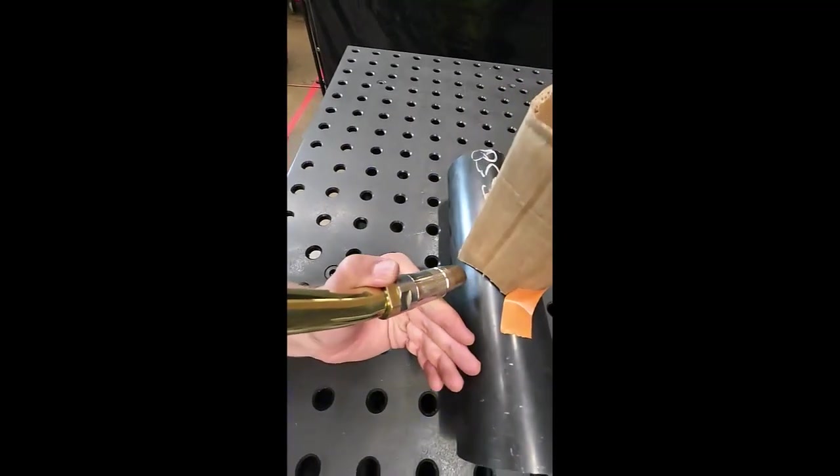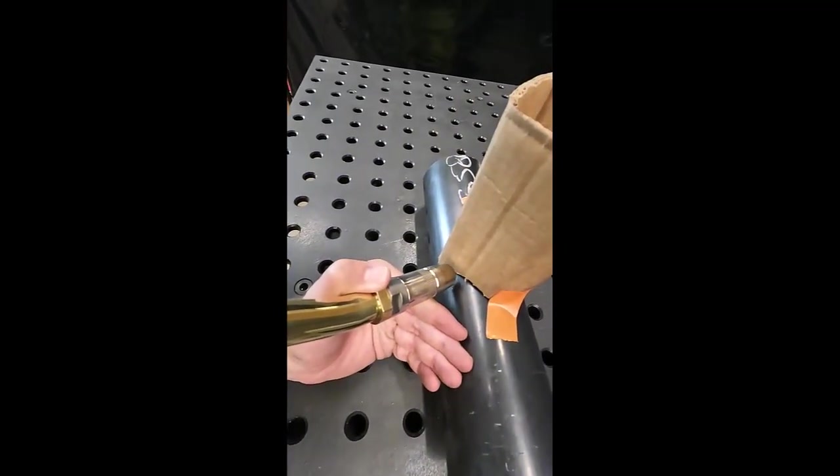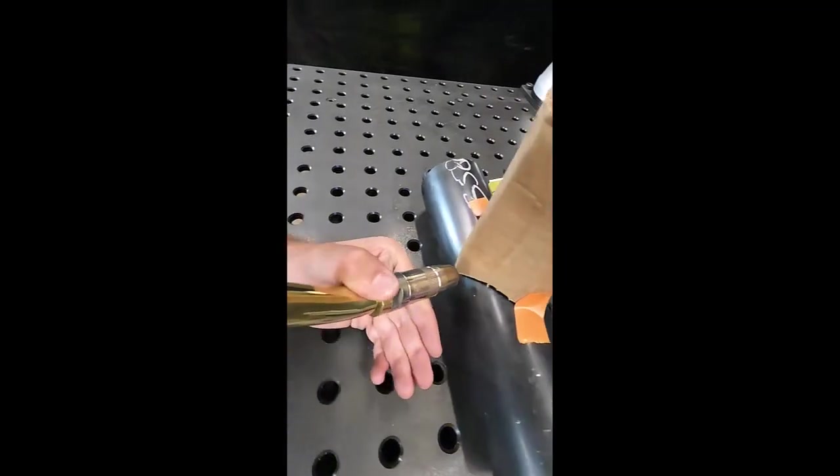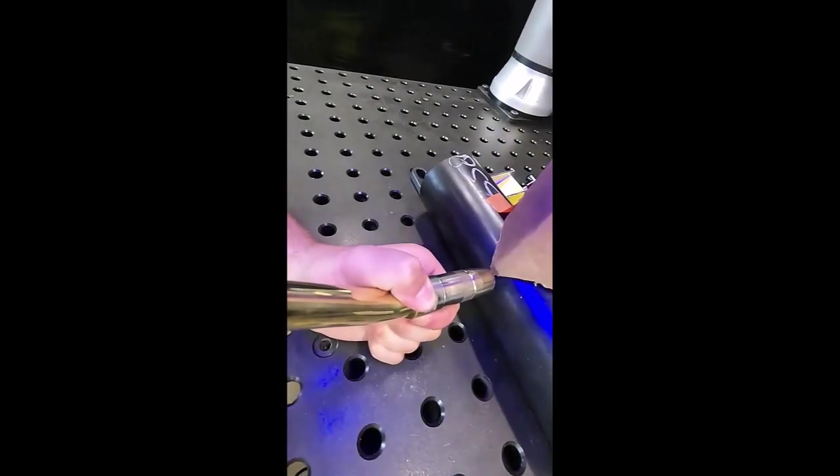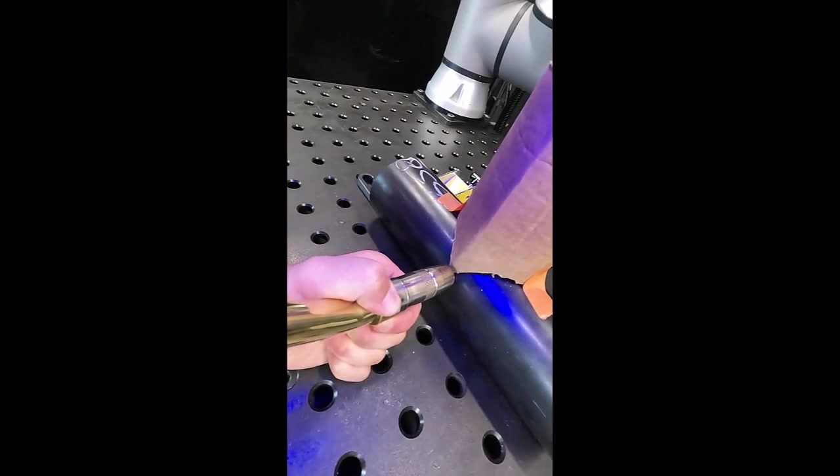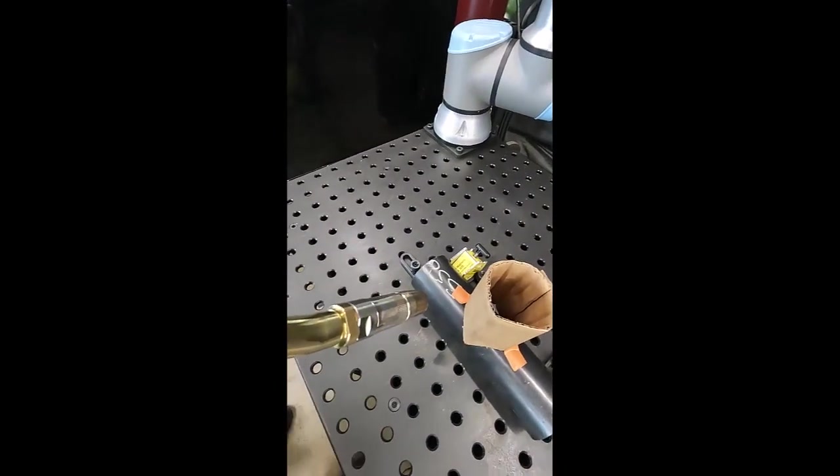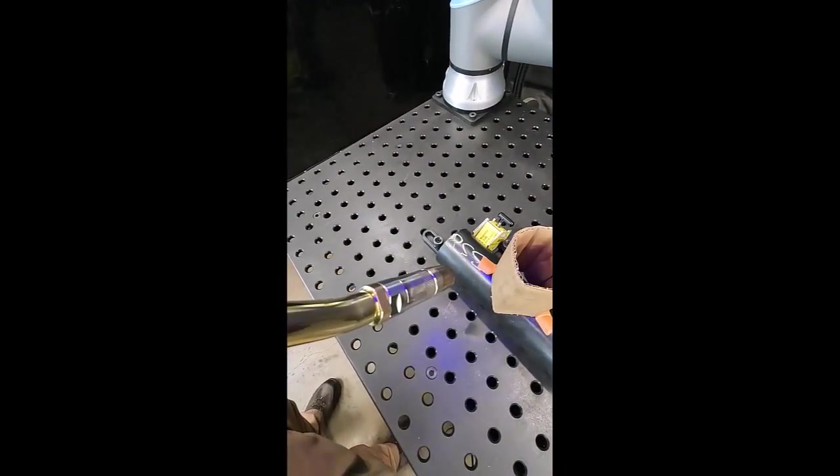And then I'm going to be moving down again. I'm going to set one here, and then finally I'm going to come out there. Then I'm pressing and holding the blue button, bringing an air move out above the part, clicking that blue button to set those points, and then I'm going to save my program.